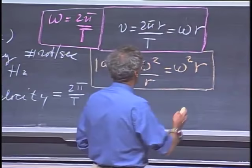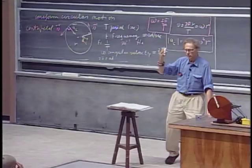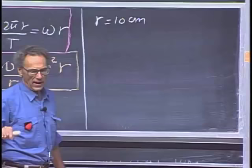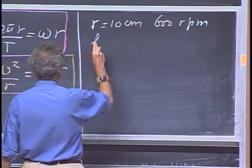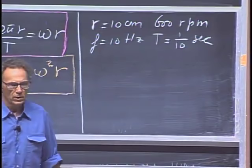Let's take a simple example: a vacuum cleaner which has a rotor inside that scoops air in or out. Assume the scoops have a radius r of about 10 centimeters, and it goes around at 600 revolutions per minute — 600 RPM. That translates into a frequency f of 10 hertz, and a period of one-tenth of a second.